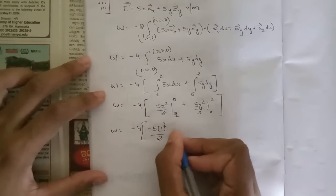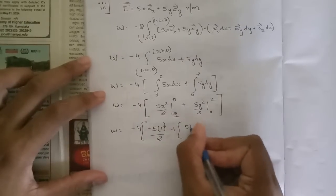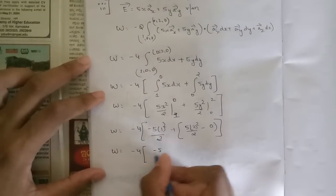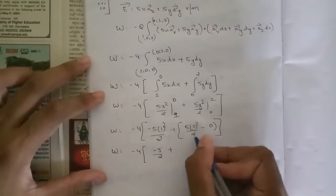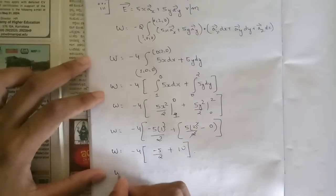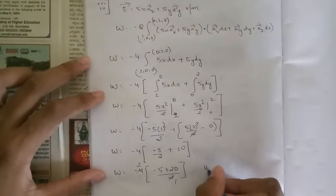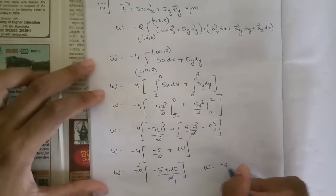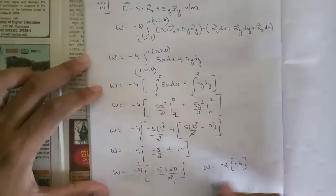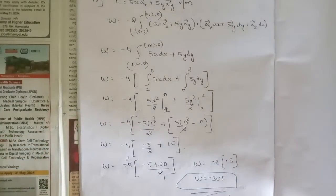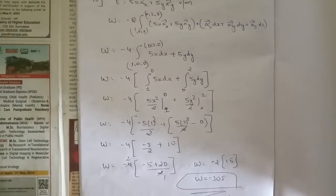Evaluating: -4 × [(0 - 5/2) + (5×4/2 - 0)] = -4 × [-5/2 + 10] = -4 × [(-5 + 20)/2] = -4 × 15/2 = -4 × 7.5 = -30 joules. The answer to sub-question 3 is -30 joules. Please note this down and try to solve it without reference. That's all for this session — see you in the next one. Thank you.